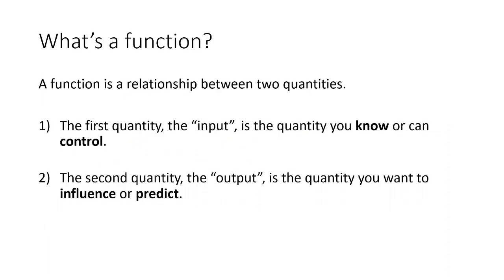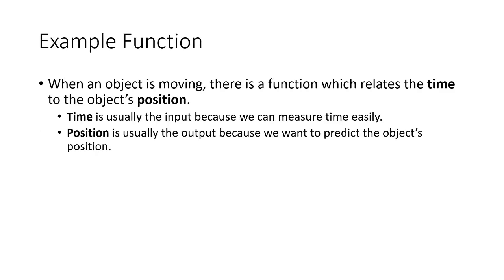So to recall, what is a function? When we say function in mathematics, a function is just a relationship — a mathematical relationship — between two quantities referred to as the input and the output. The input quantity is usually the quantity that you know or can control, while the output quantity is usually the quantity that you want to influence or predict. The quintessential example is a function that relates time with an object's position if you have a moving object.